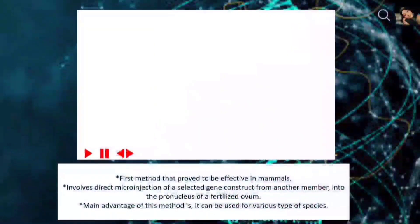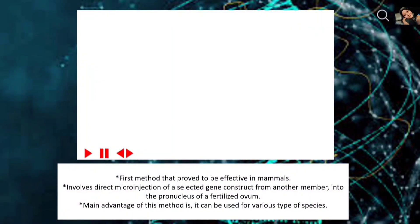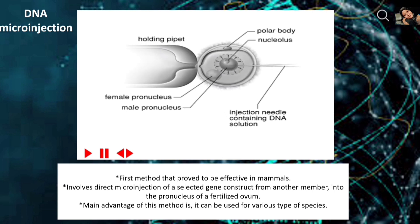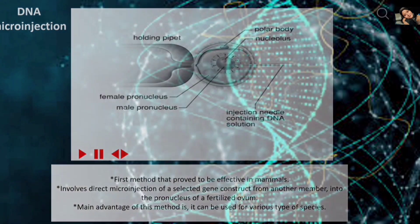Let's start with the first one, which is DNA micro injection. This method is a commonly used method in transgenics, and it is one of the first methods that proved to be effective in mammals. It involves direct micro injection of a selected gene construct into the pronucleus of a fertilized egg. The main advantage of this method is that it can be used for various types of species.